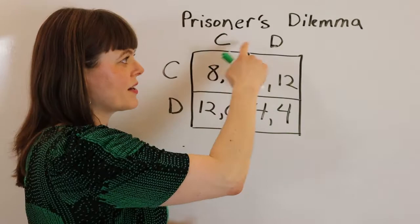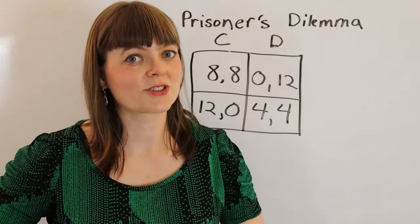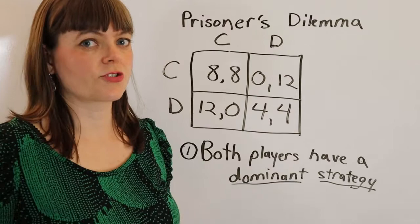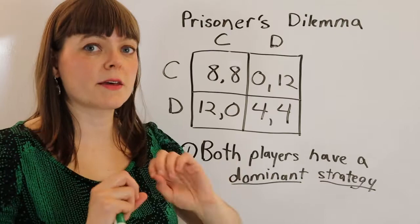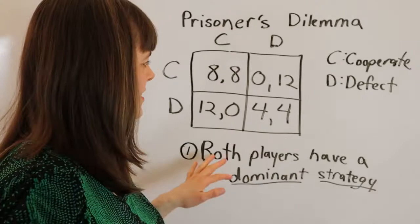This is the classic setup for a prisoner's dilemma. We have cooperate and defect as the two choices, and for now I'll leave those generic. There are going to be two characteristics that all prisoner's dilemmas share. The first is that both players have a dominant strategy. A dominant strategy is a strategy that will always be the best response no matter what choice your opponent chooses.